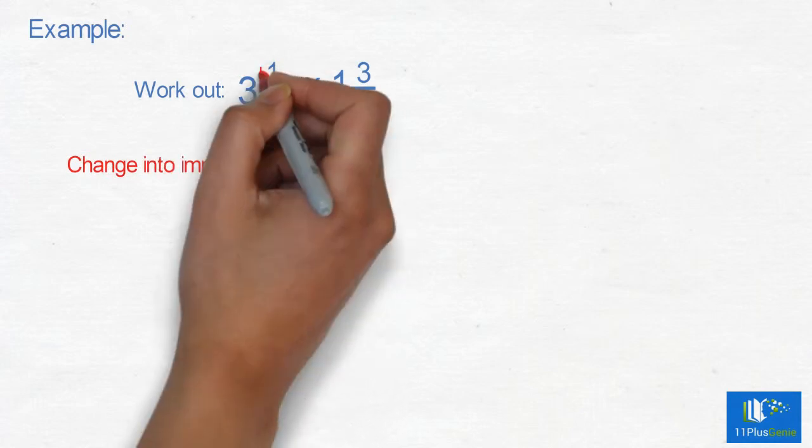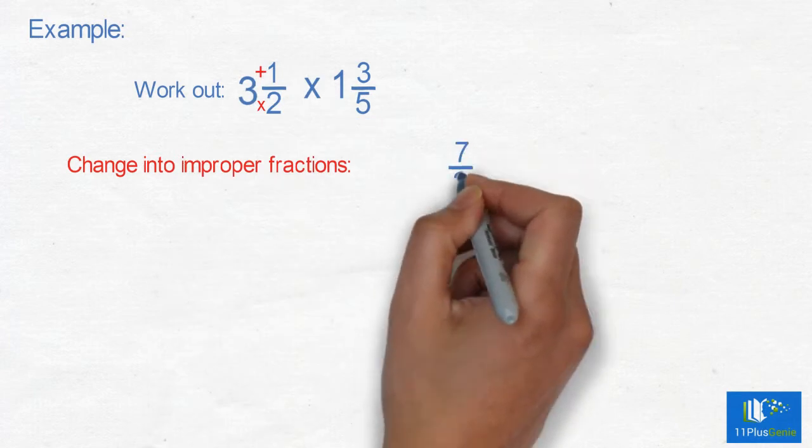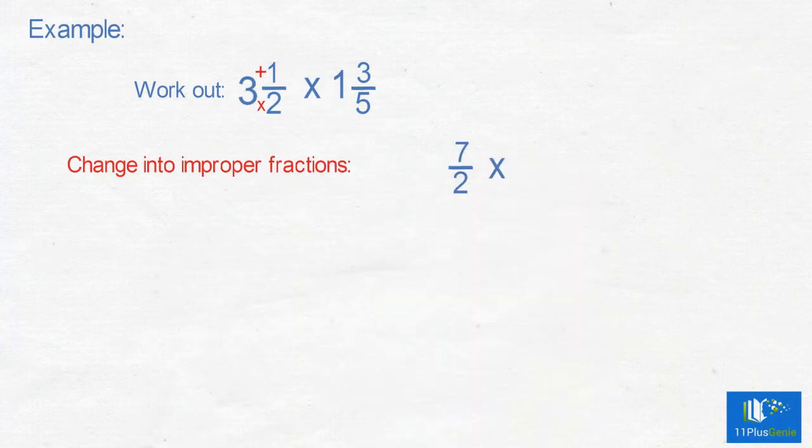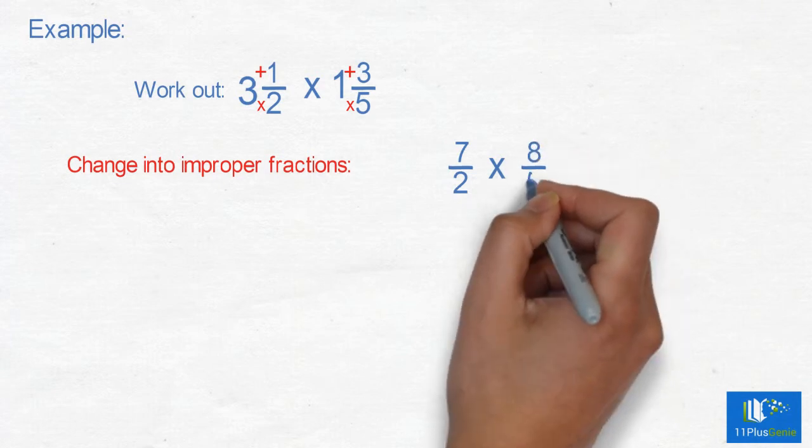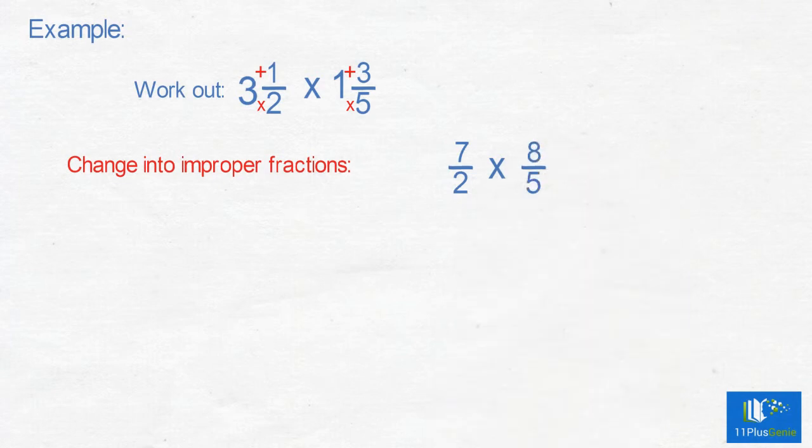2 times 3 equals 6. Add 1 equals 7, which gives 7/2. 5 times 1 equals 5. Add 3 equals 8, which gives 8/5.